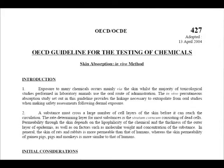This slide shows the front of OECD test 427 Skin Absorption in Vivo method. Part 2 of the introduction reads: a substance must cross a large number of cell layers of the skin before it can reach the circulation. The rate-determining layer for most substances is the stratum corneum, consisting of dead cells. Permeability through the skin depends on the lipo-facility of the chemical — that is how well it dissolves in fat — and the thickness of the outer layers of epidermis, as well as on factors such as molecular weight and concentrations of the substance.